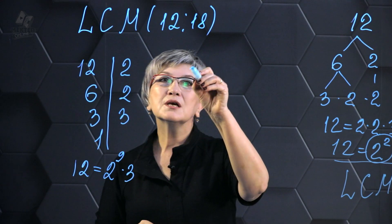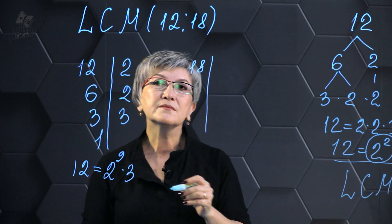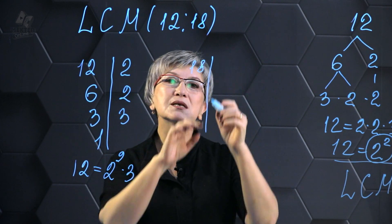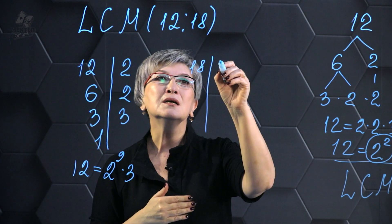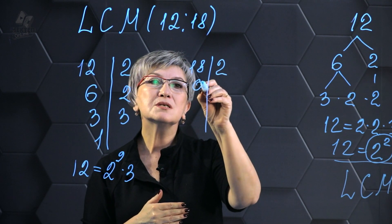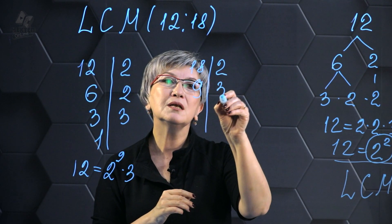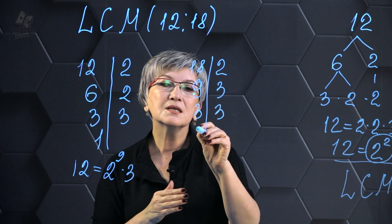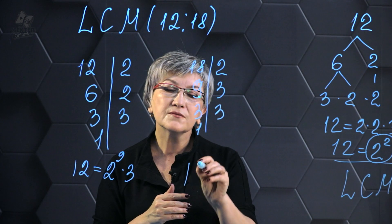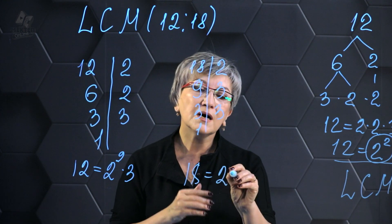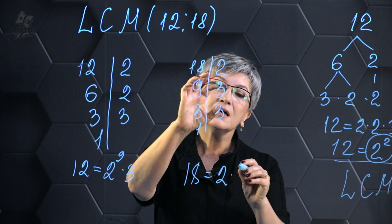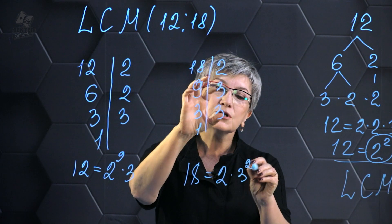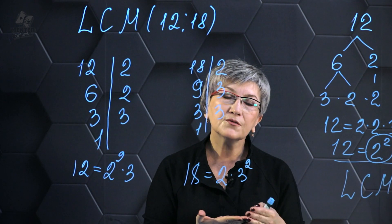In the same way, I break down the number 18 into its factors. 18, I divide by 2, I'm getting 9. I divide 9 by 3 because it doesn't divide evenly by 2. I'm getting 3. If you divide 3 by 3, you get 1. As a result, 18 equals 2 times 1 and I have two 3s, so 2 multiplied by 3 to the second power.